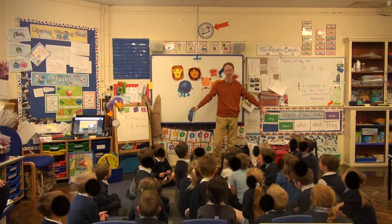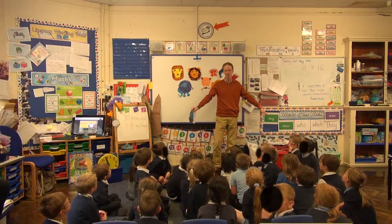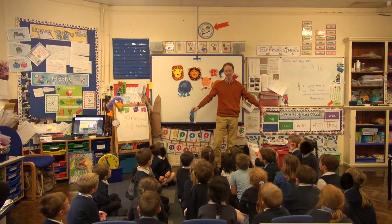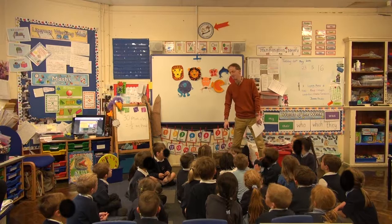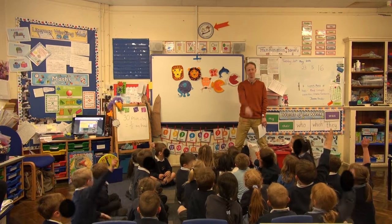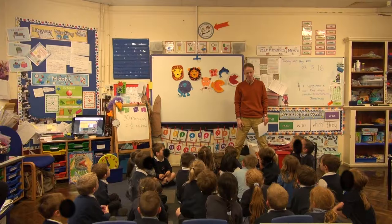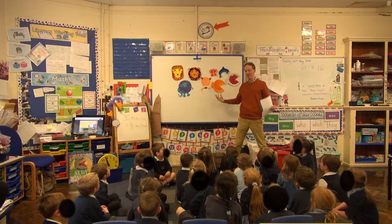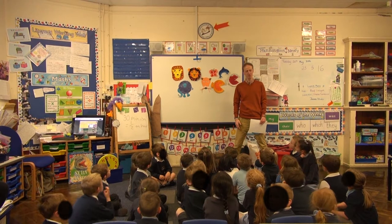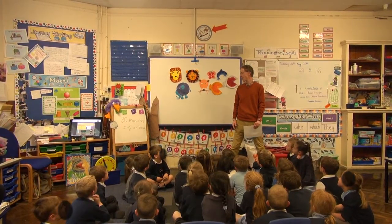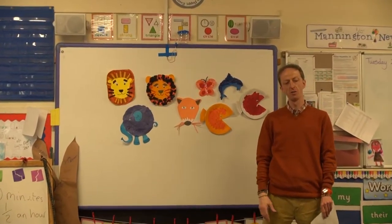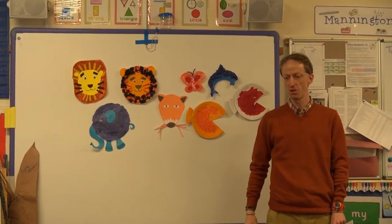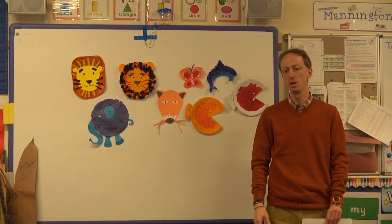We're going to be listening really carefully now and do some lovely art and crafty fun. Who's been listening to a piece of music in assembly? There's a clue on the back wall - all these animals! It's a big carnival of animals, lots of different animals. We're going to have a lovely piece of music played in school called the Carnival of the Animals, which describes lots of different creatures that live in the world.